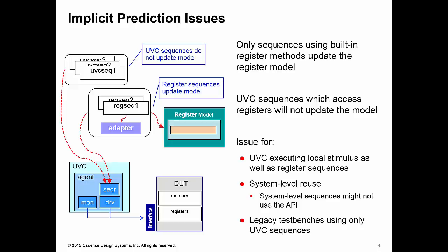Obviously, wherever we have a mix, perhaps, between sequences that access registers by the API and sequences which access the registers just using the native sequences of your UVC. This could be a problem and an issue in system level reuse, for example, because your system level sequences are less likely to use the API methods. An obvious problem for legacy test benches, for example, which may not use the API methods.